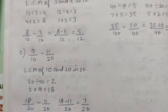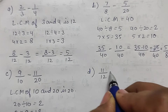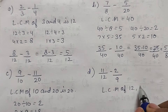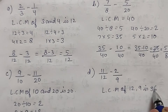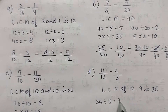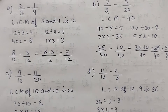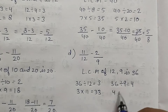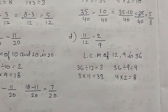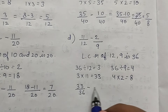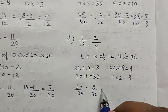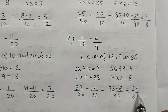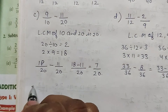Part d: 11/12 minus 2/9. The LCM of 12 and 9 is 36. 36 divided by 12 is 3, and 3 into 11 is 33. 36 divided by 9 is 4, and 4 into 2 is 8. So the new fractions are 33/36 minus 8/36, which equals 25/36.